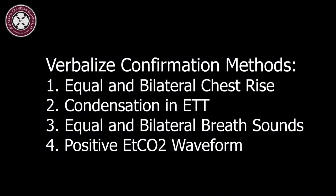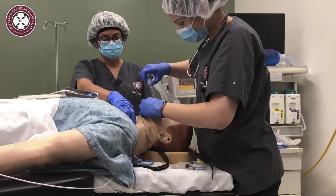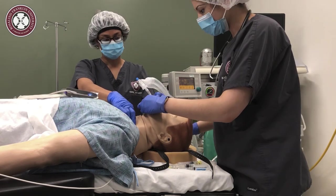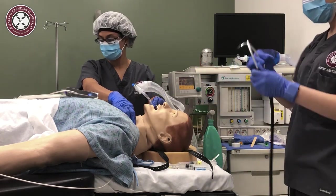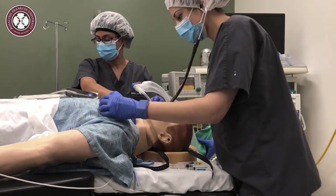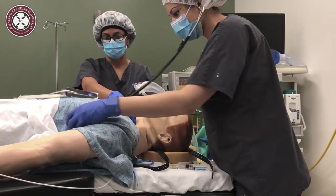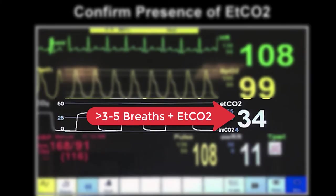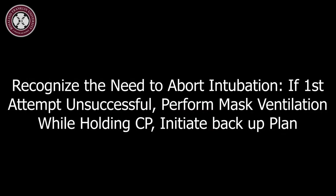Proceed to confirm proper placement. Confirmation methods must be verbalized and include: equal and bilateral chest wall movement, condensation inside the endotracheal tube, and equal and bilateral breath sounds. Lastly, an adequate and consistent end-tidal CO2 tracing present for greater than 3 to 5 breaths is also mandatory. If the intubation was not successful, recognizing the need to forego the attempt and initiate mask ventilation is key.